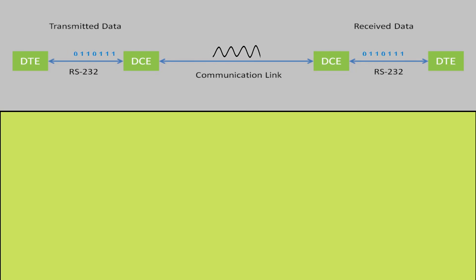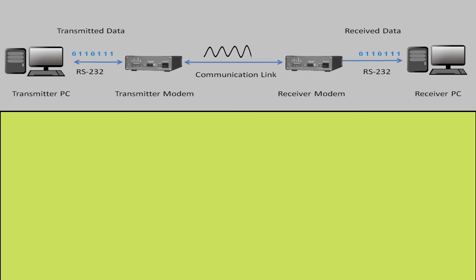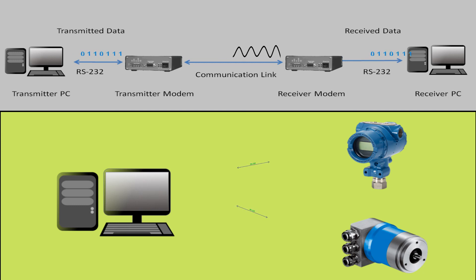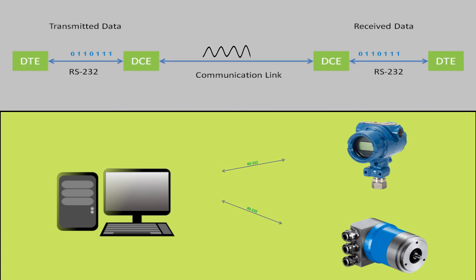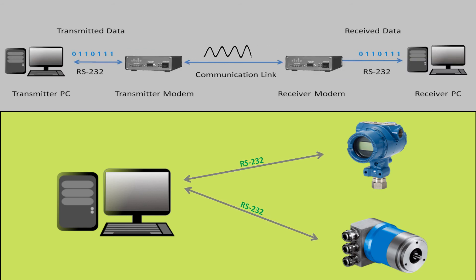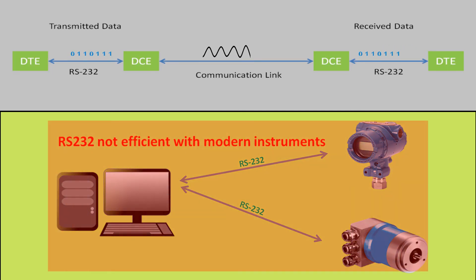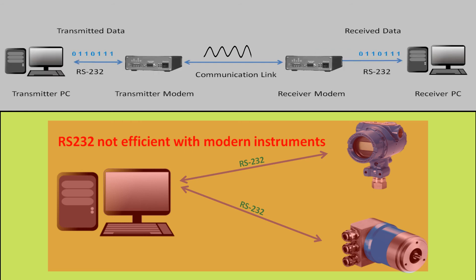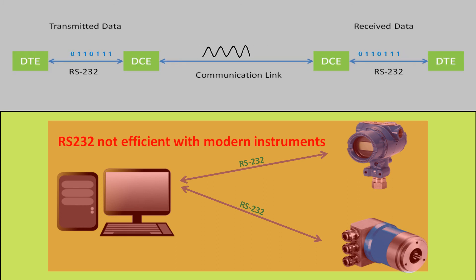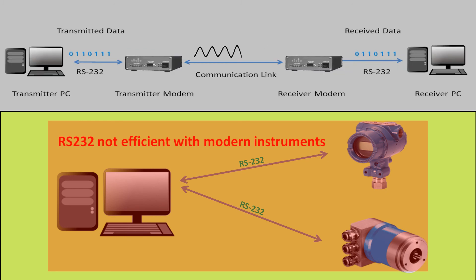RS-232 was originally designed for interfacing data terminals to modems. Later, with the invention of the PC, digital instrumentation, drives, and similar equipment, other EIA interface standards were developed to overcome some of its limitations. The most commonly used among them for instrumentation and control systems are EIA-423, EIA-422, and EIA-485.